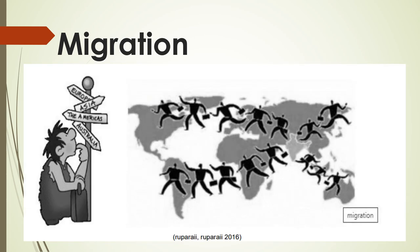Another global issue linked with economic growth, poverty, and human rights is migration — not only because it can have many social and economic benefits, but also because it presents challenges. Migration is the movement of people from one place to another with the intention of settling permanently in a new location. The movement is often long distance and from one country to another, but internal migration is also possible.